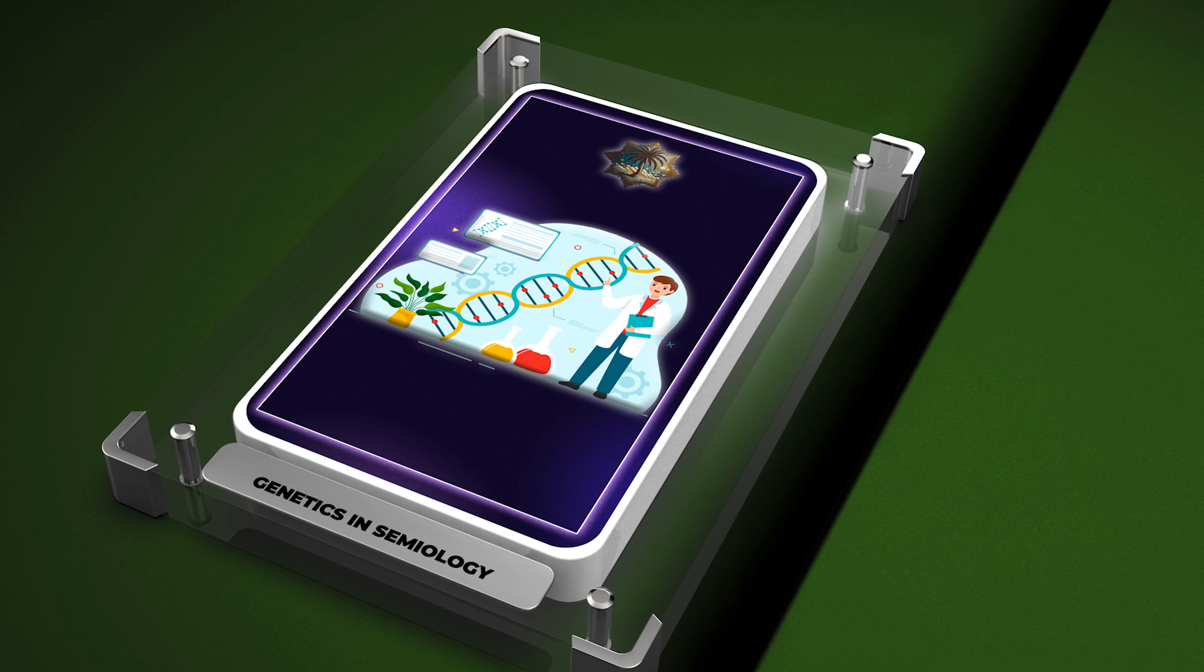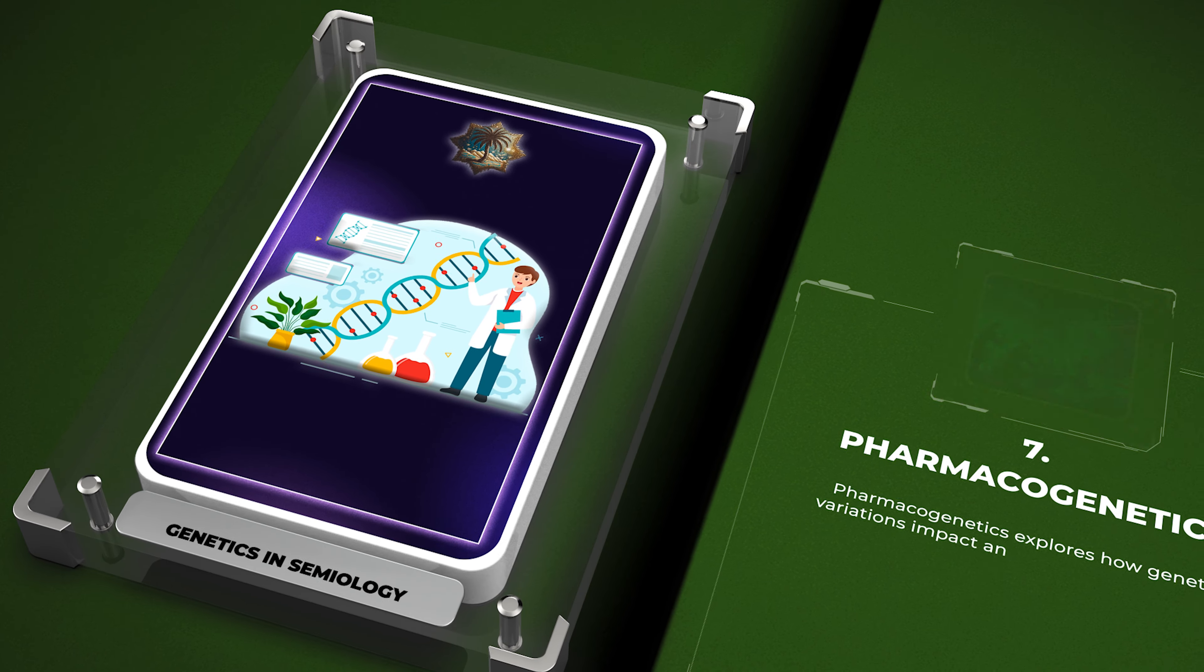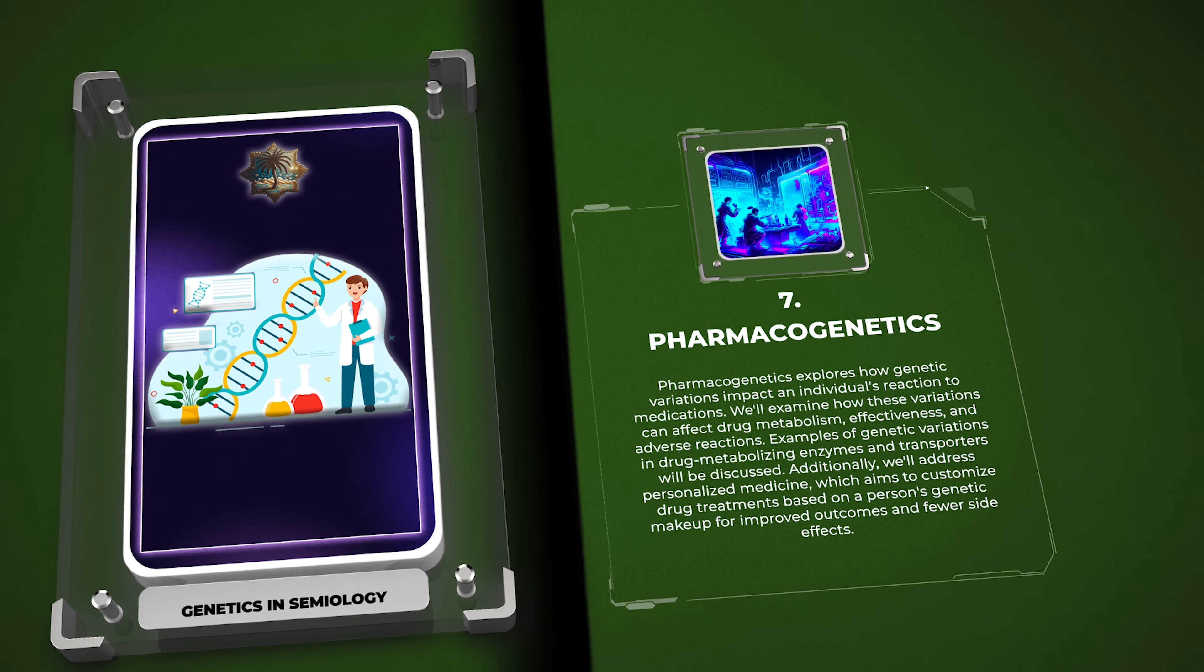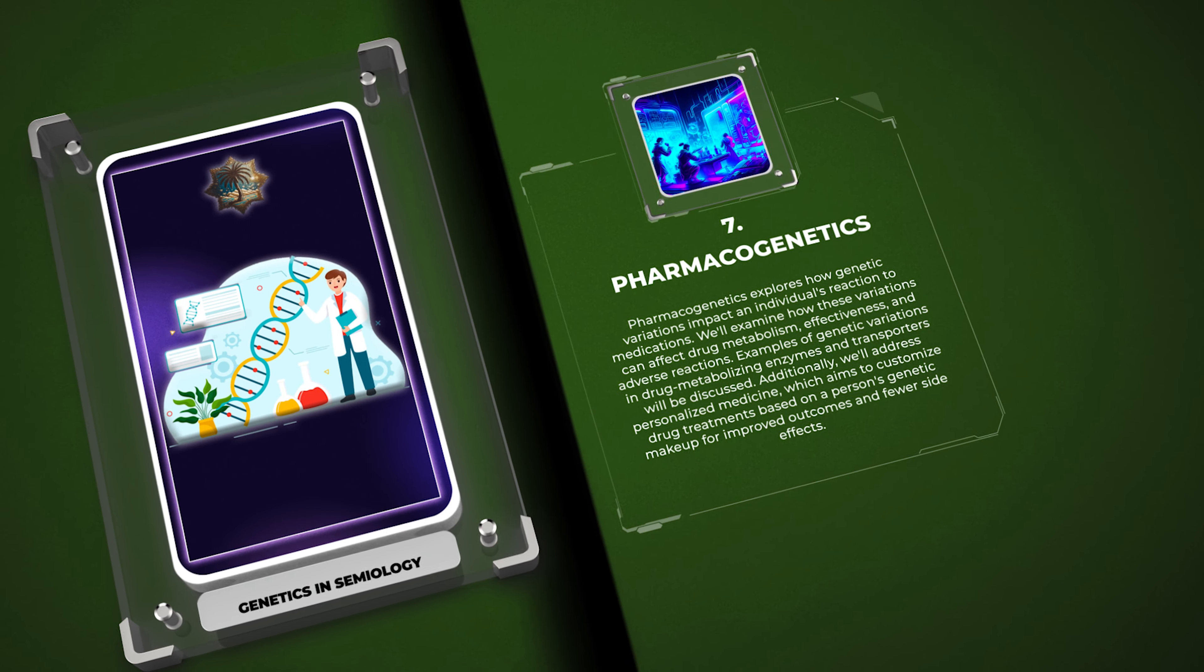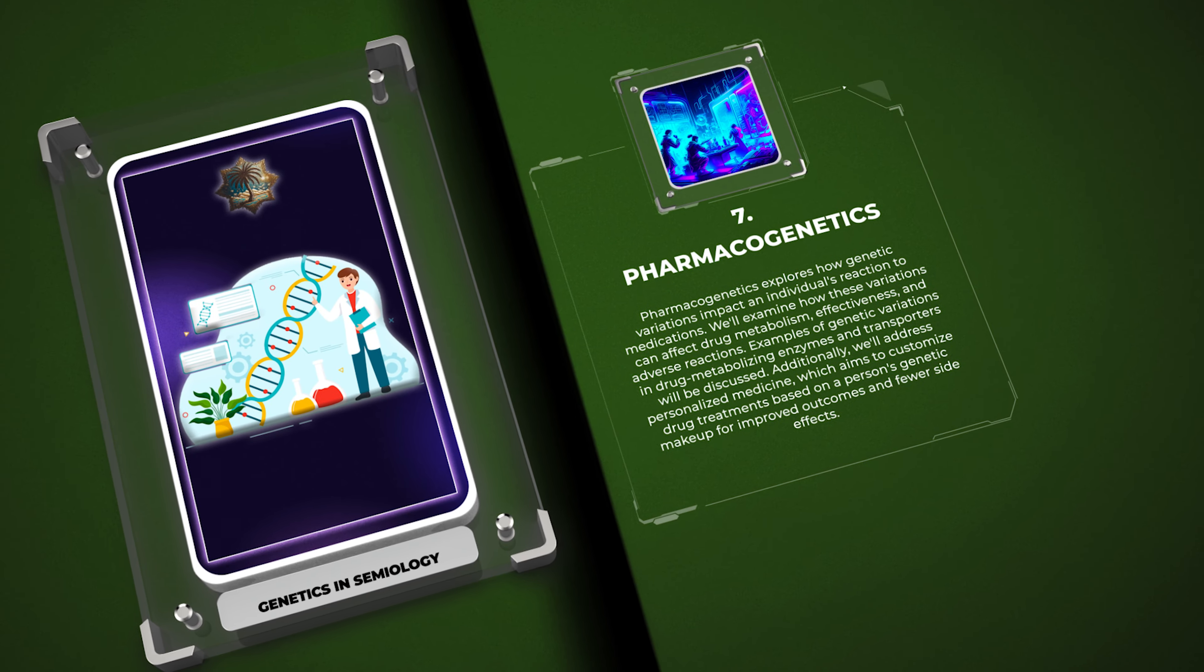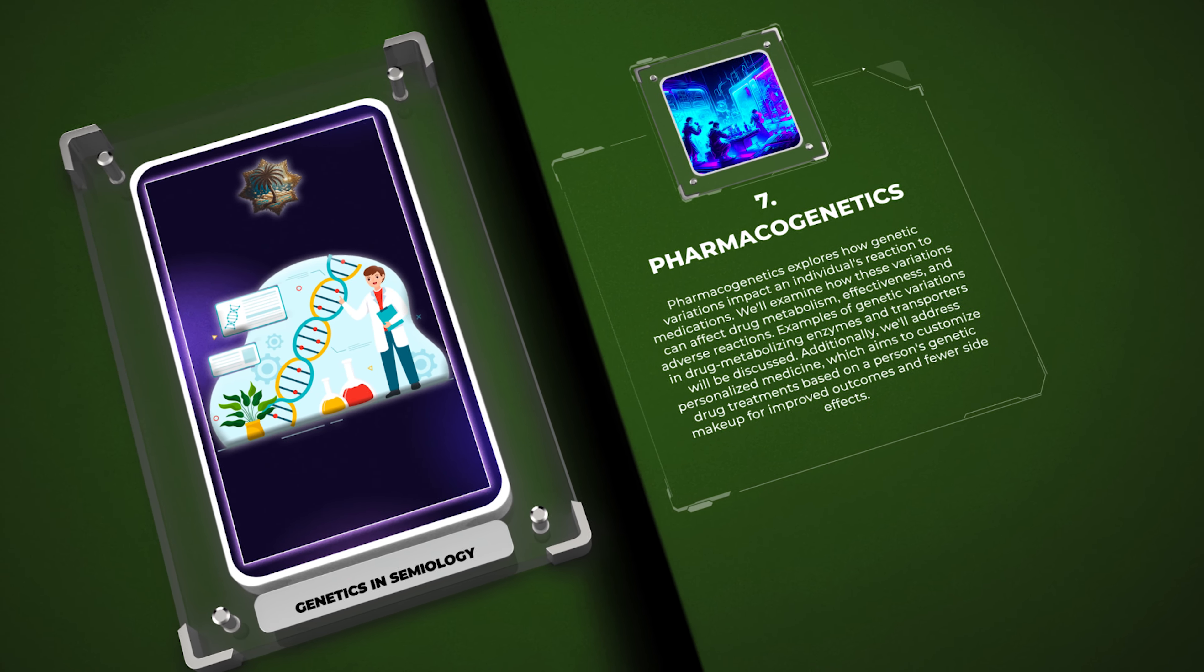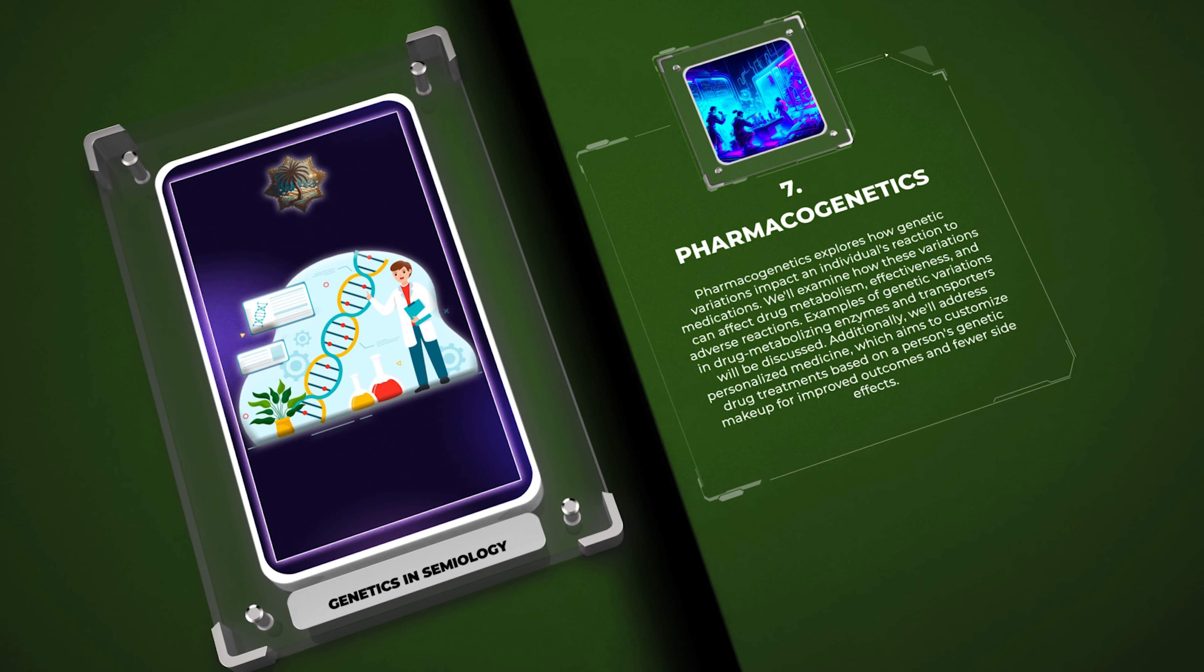Pharmacogenetics explores how genetic variations impact an individual's reaction to medications. We'll examine how these variations can affect drug metabolism, effectiveness, and adverse reactions. Examples of genetic variations in drug metabolizing enzymes and transporters will be discussed. Additionally, we'll address personalized medicine, which aims to customize drug treatments based on a person's genetic makeup for improved outcomes and fewer side effects.